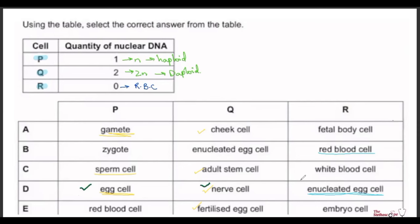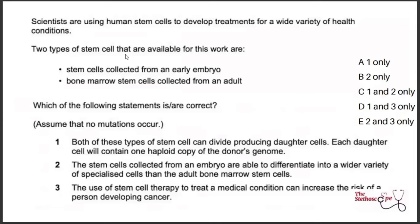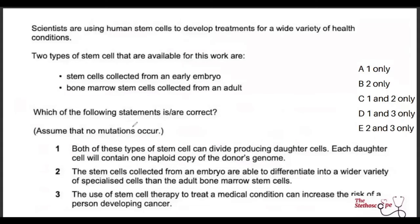Next question is about stem cells — we have three statements comparing embryonic stem cells to adult bone marrow stem cells. Statement one says both types of stem cells can divide producing daughter cells, but states each daughter cell contains one haploid copy of the donor's genome. That's the problem — they would actually contain a diploid copy. Haploid means half the genetic information, and only gametes are haploid. So statement one is incorrect.